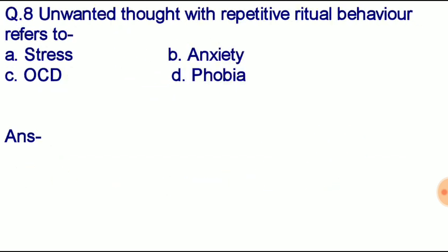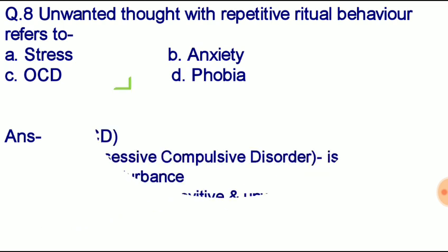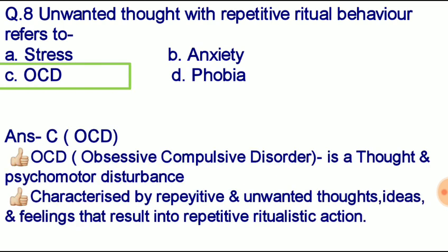Question number eight: unwanted thought with repetitive ritual behavior refers to — option A: stress, option B: anxiety, option C: OCD, option D: phobia. Correct answer: option C, OCD. OCD stands for Obsessive Compulsive Disorder — a thought and psychomotor disturbance characterized by repetitive and unwanted thoughts, ideas, and feelings that result in repetitive ritualistic actions.